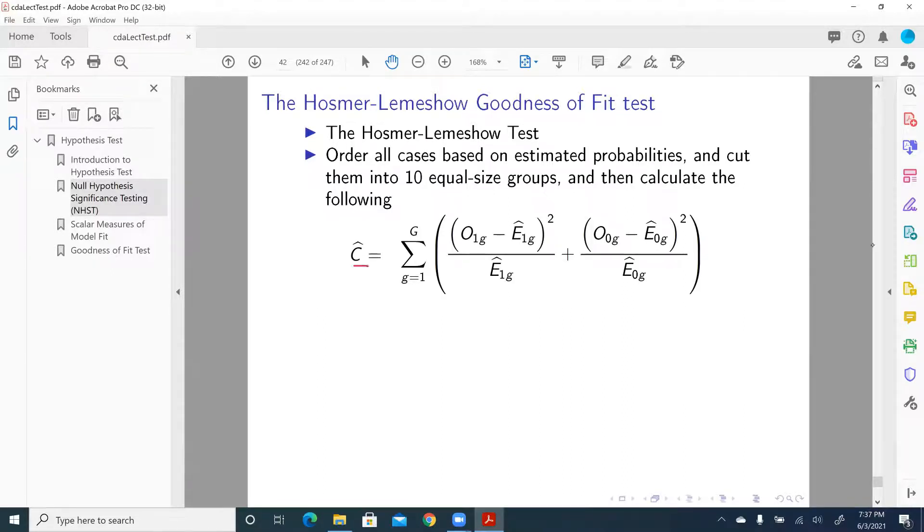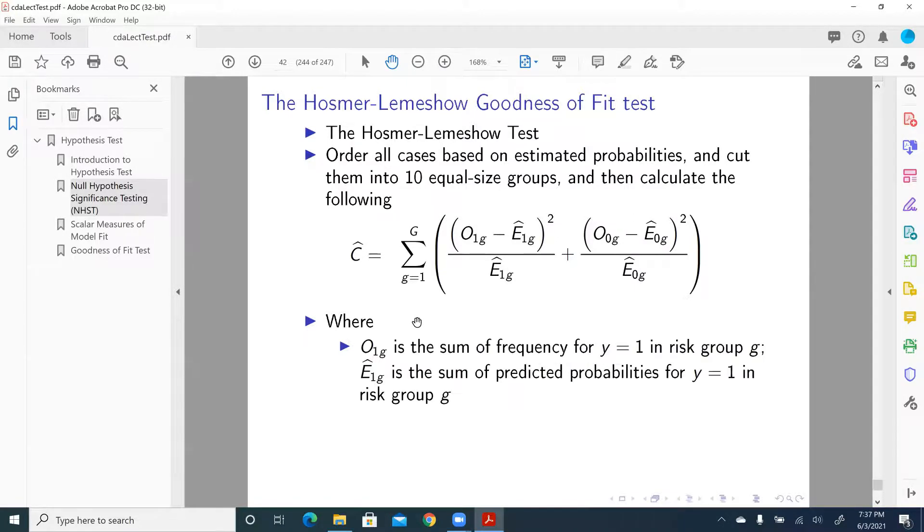And then we're going to calculate the following, called C statistic. So remember we have 10 groups, and we're going to calculate this C statistic. Here we have O1G, E1G hat, and O0G and E0G hat. What are these numbers? O1G is the sum of frequency for Y equal to 1. So in group one, we're going to count the total number of cases that have Y equal to 1 in group one. For group G, we're going to count the sum of frequency for Y equal to 1, the number of cases with Y equal to 1.